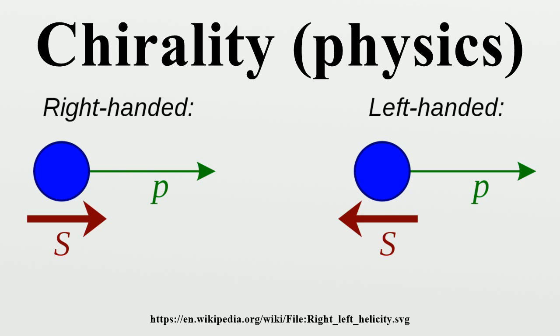A massless particle moves with the speed of light, so a real observer cannot be in any reference frame where the particle appears to reverse its relative direction, meaning that all real observers see the same chirality.